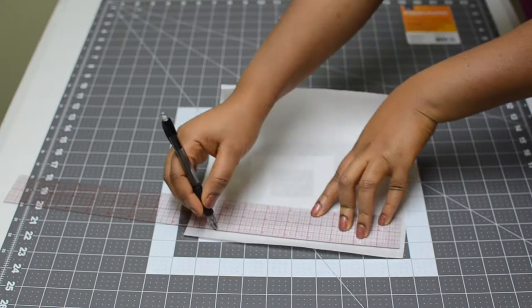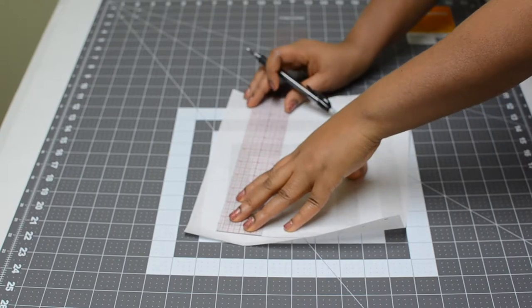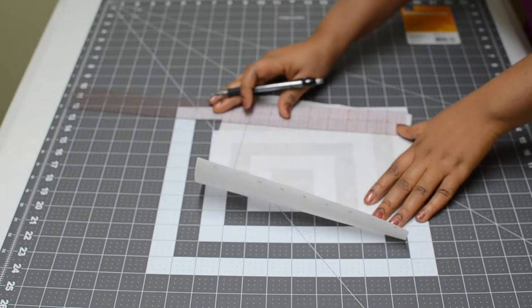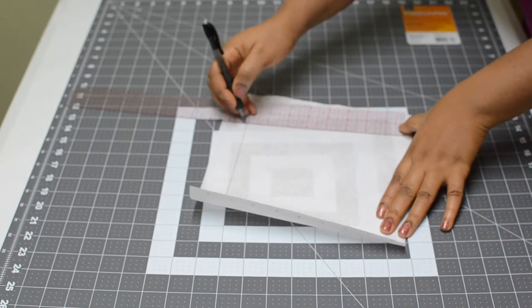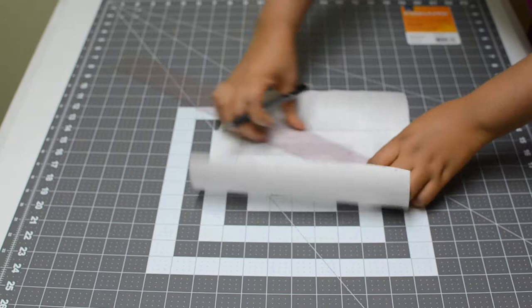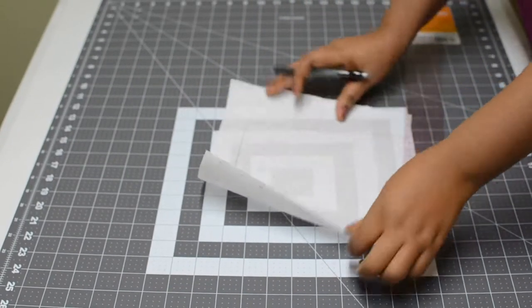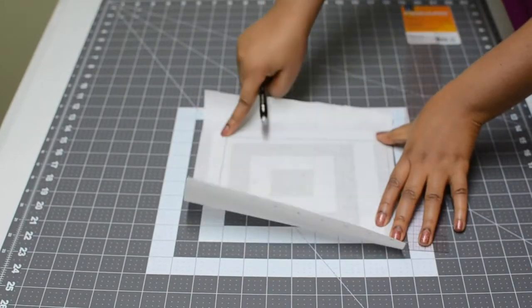First we need to make a template for the shapes of the coasters or the pads. Get a ruler, a pencil, and a paper. Draw out a square measuring 8 inches all around.